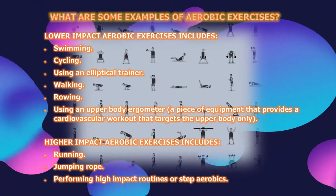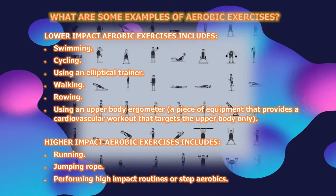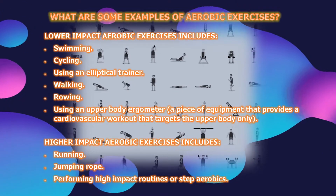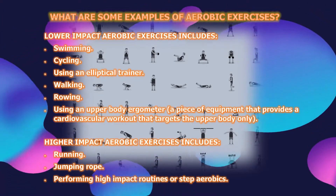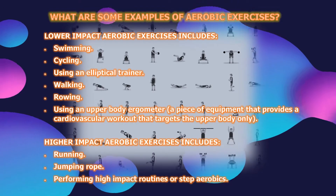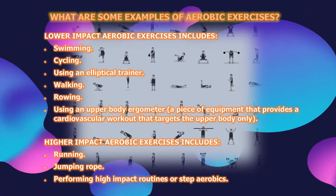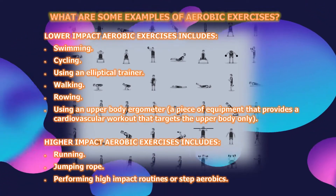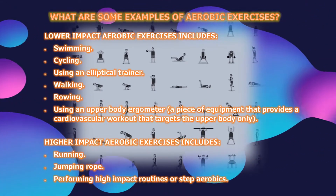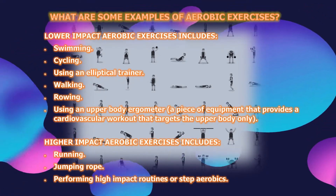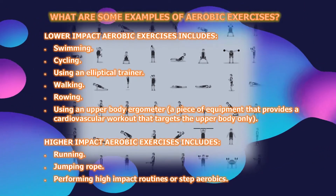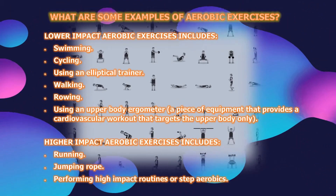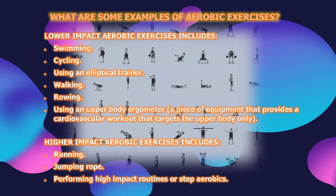Some examples of aerobic exercises include lower impact and higher impact aerobic exercises. Lower impact aerobic exercises include swimming, cycling, using an elliptical trainer, walking, rowing, and using an upper body ergometer. Higher impact aerobic exercises include running, jumping rope, performing high impact routines, or step aerobics.